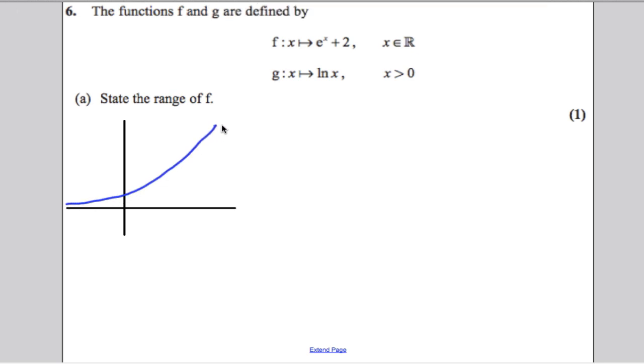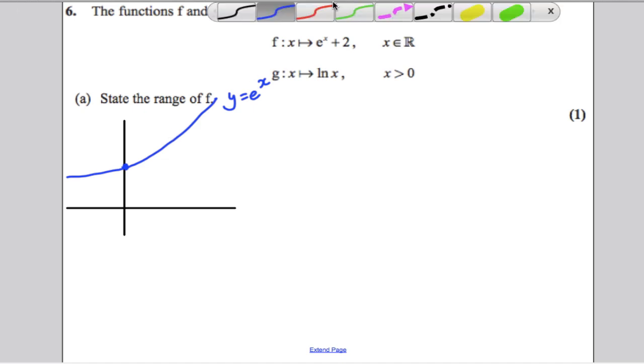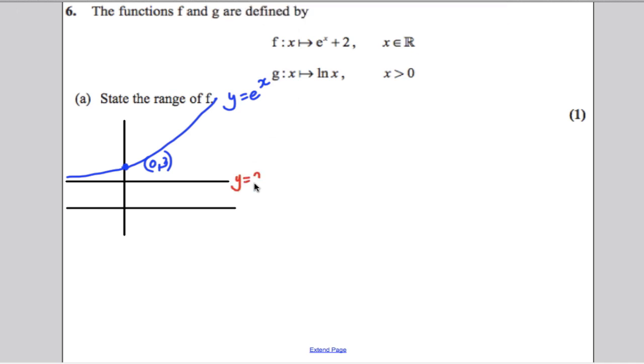Now, this is the graph of e to the x, and it crosses here at 0, 1. Now, e to the x plus 2, it's just shifted up two spots, and it would cross at 0, 3. It also, before it was asymptoting to the x axis, now it asymptotes to the line y is equal to 2. So, what y values can this function take here? Well, it can take any value bigger than 2. So, what we would state for the range is that f(x) is strictly bigger than 2. And the graph shows us that, simple as that.